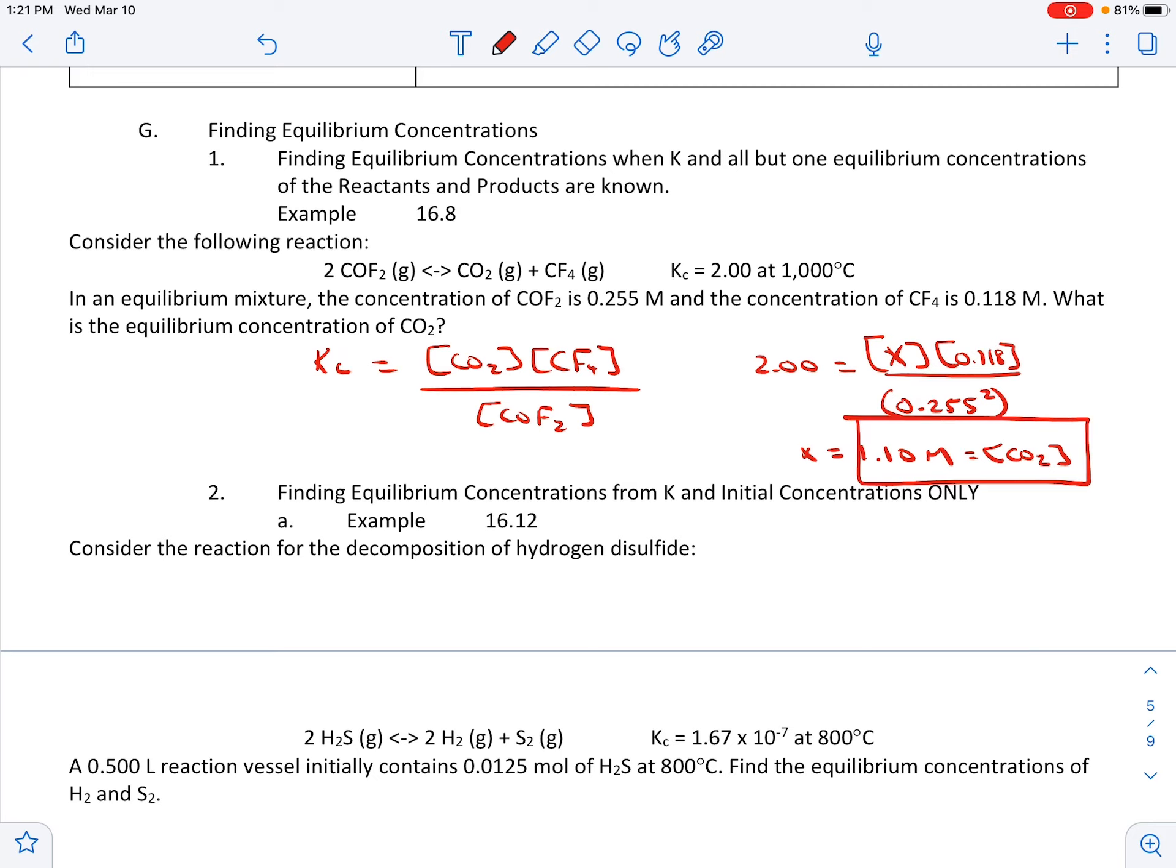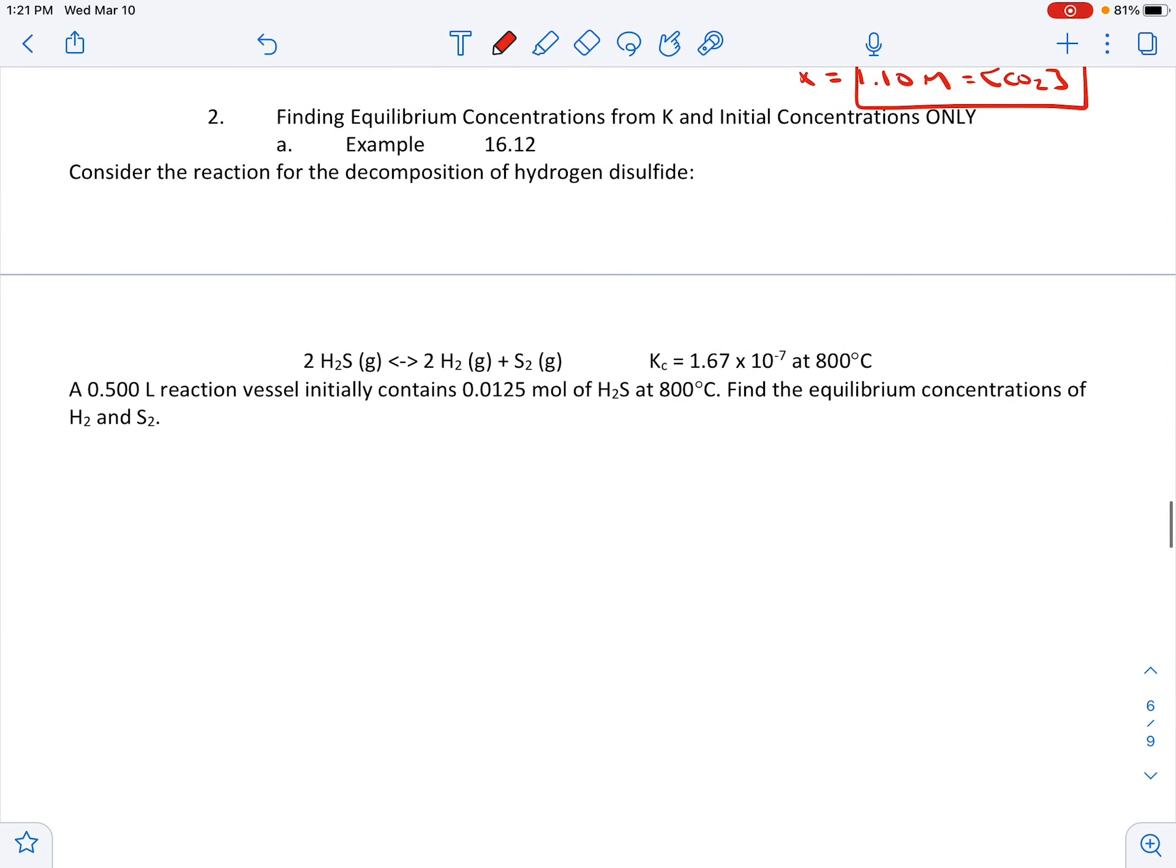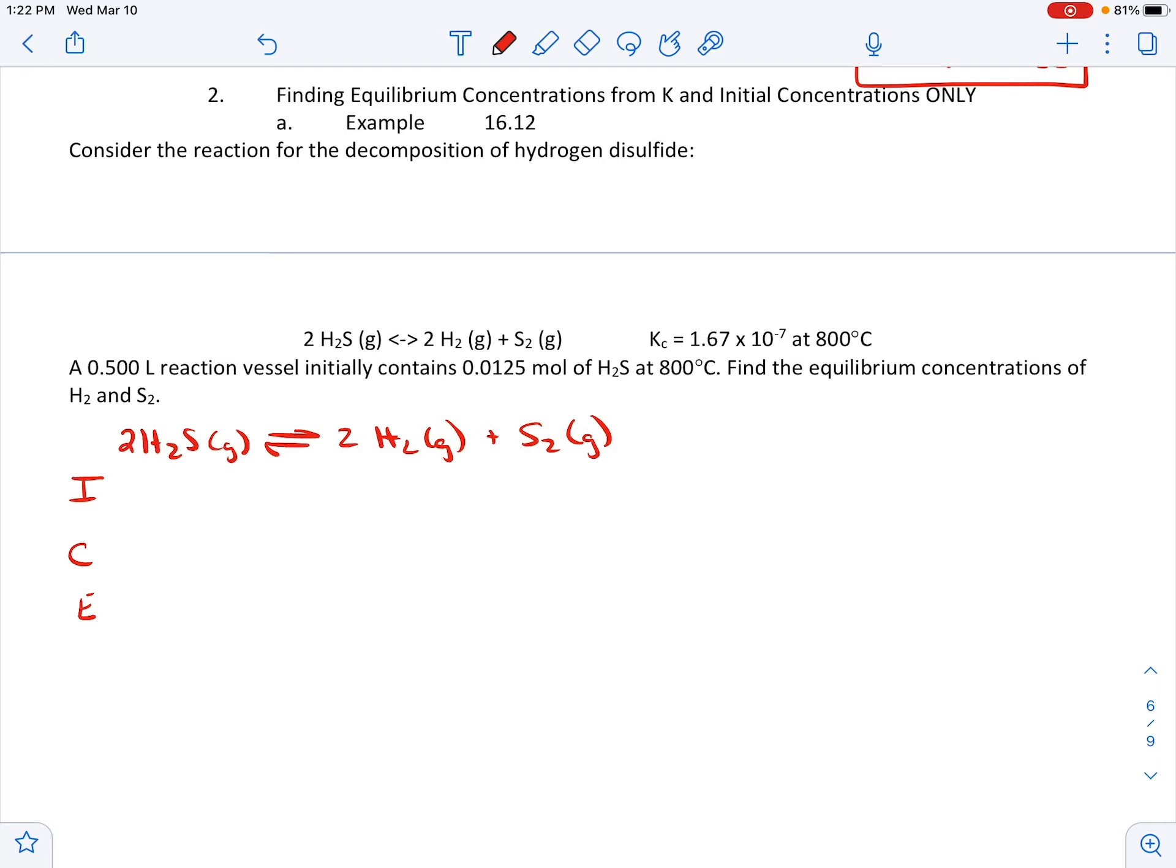Now let's look at some tougher ones. We have the initial concentration, so we're going to require just a little bit more work here. Consider the reaction for the decomposition of hydrogen disulfide. We know KC and we have our initial concentrations of H2S and we're supposed to find our equilibrium concentration. Our first step is to write our balanced chemical equation. We have 2H2S gas, our double sided arrow telling us equilibrium, 2H2 gas, and then S2 gas. Then we have our ICE chart. As you can see, we have liters and moles, so we have to get to concentration first.